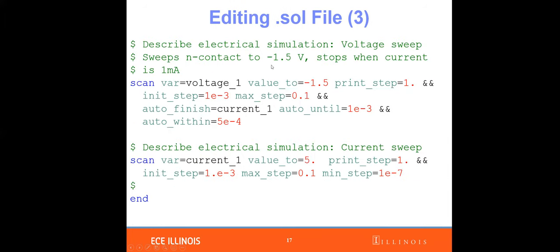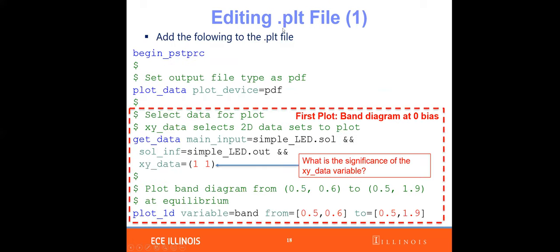With the voltage sweep and current sweep specified in the solution file, we move to the plot file. Once you execute this plot file, you get a PDF output to analyze your final results. The first line, plot device equals PDF, tells the program to output in PDF format. For the first plot — the band diagram under zero bias, equilibrium condition — you get data using get-data main-input with the solution file and output file.